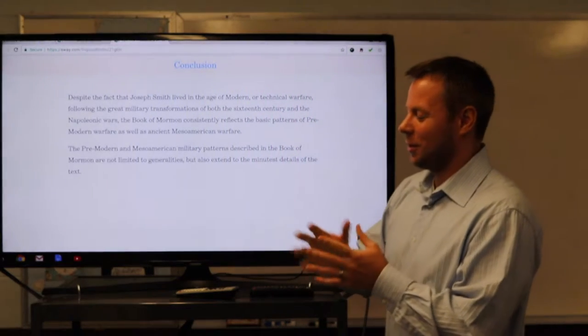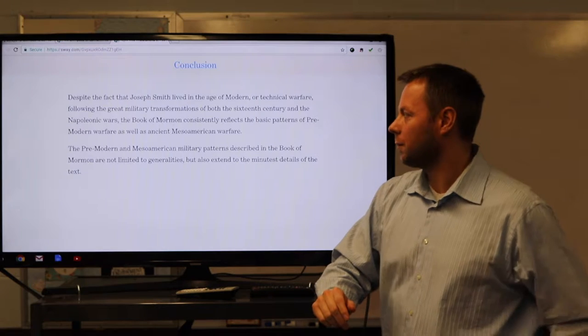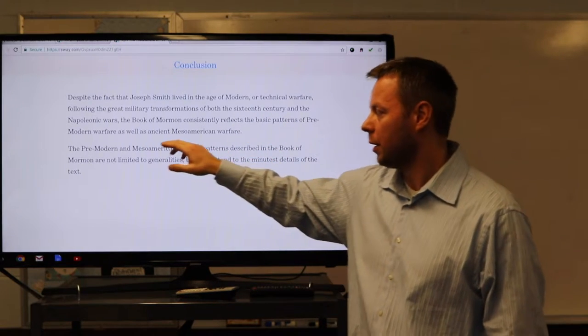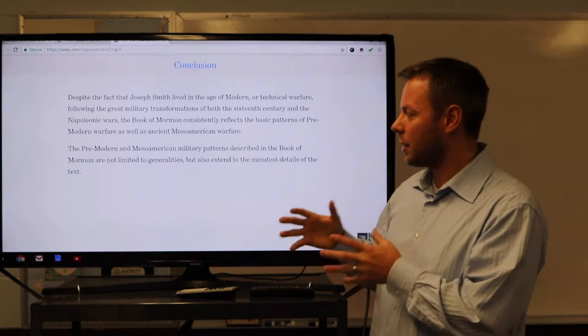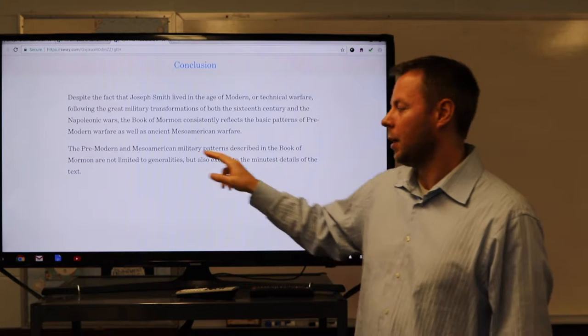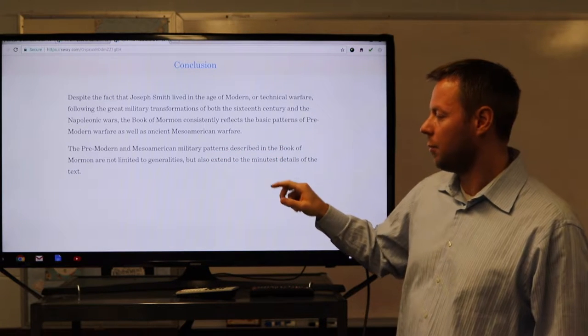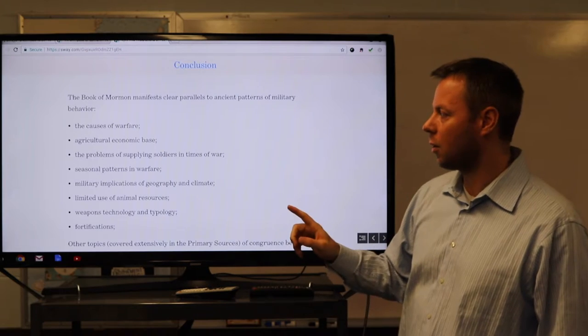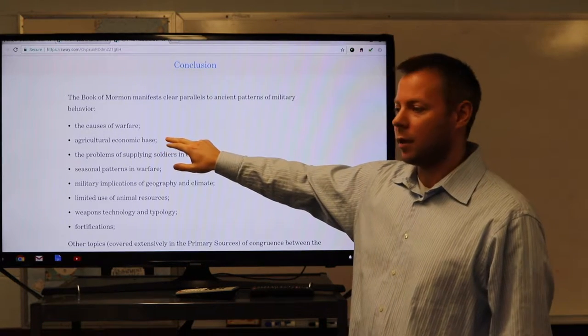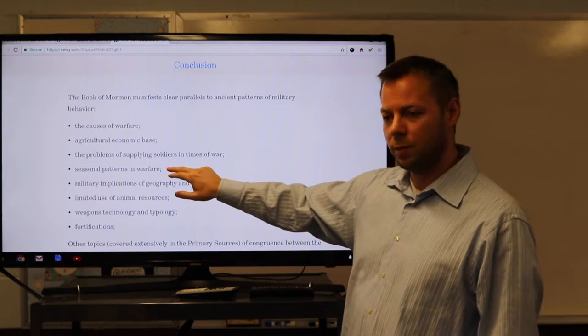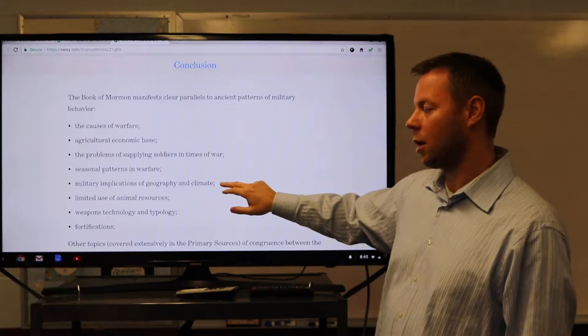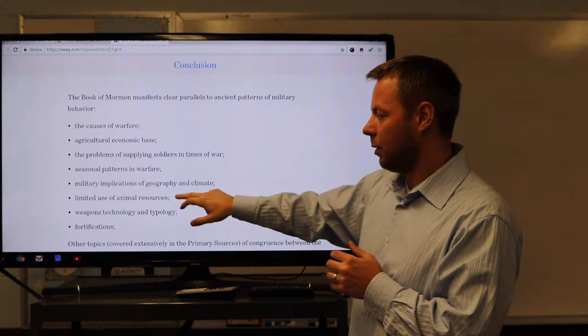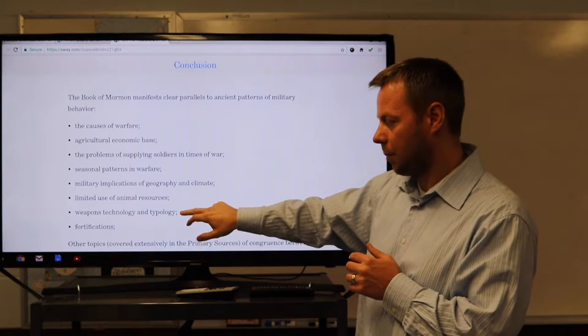So, our overall conclusion on warfare. Despite the fact that Joseph Smith lived in the age of modern or technical warfare, we talked about that at the very beginning, how this huge shift in warfare occurs, both the 16th century and the Napoleonic Wars. So, Joseph Smith is living post-shift. The Book of Mormon itself consistently reflects the basic patterns of pre-modern warfare, as well as ancient Mesoamerican warfare. The pre-modern and Mesoamerican military patterns described in the Book of Mormon are not limited generalities, but extend to the minutest details of the text. We've covered just the following. Causes of warfare, the agricultural economic base, the problems of supplying soldiers in times of war. We covered seasonal patterns in warfare. We covered military implications of geography and climate. We worked through, actually, two distinct battles, right, and showed them on the map. Limited use of animal resources. And then we covered weapons technology and typology and fortifications.